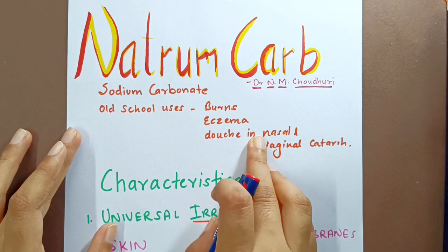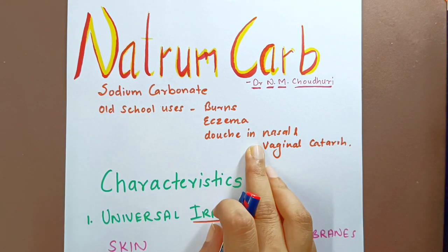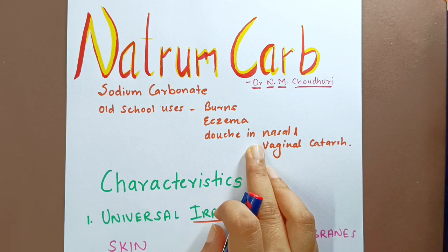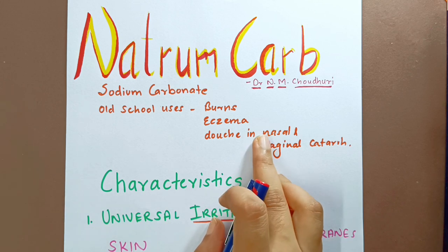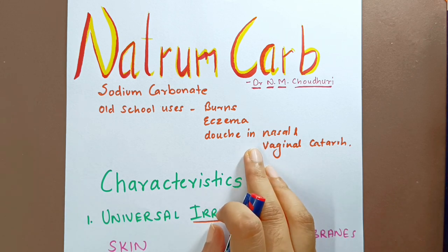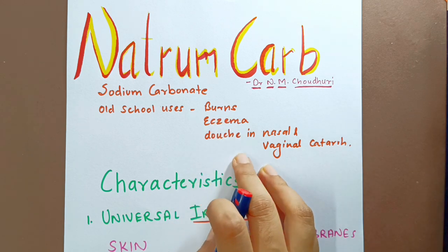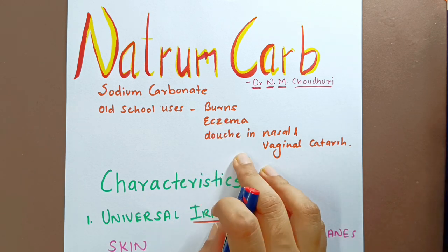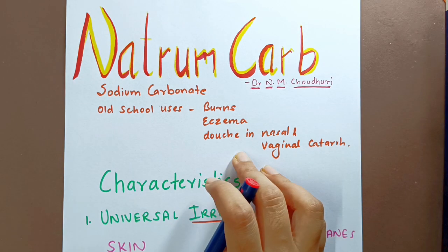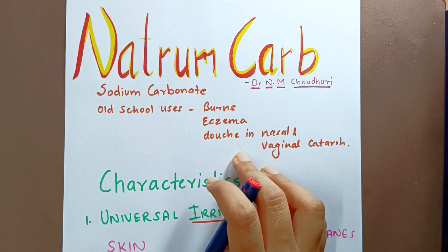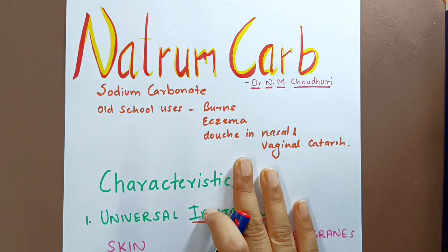This tells us about its action on skin. It was also used as a spray or douche in nasal and vaginal catarrh, giving us an idea about its action on mucous membranes. So even in the nose and vaginal area, we have mucous membranes. Both things tell us about its sphere of action.